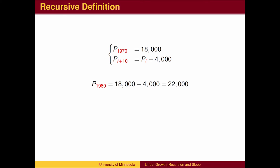For example, inserting t equals 1970, we can calculate the 1980 population by adding 4000 to the 1970 population.